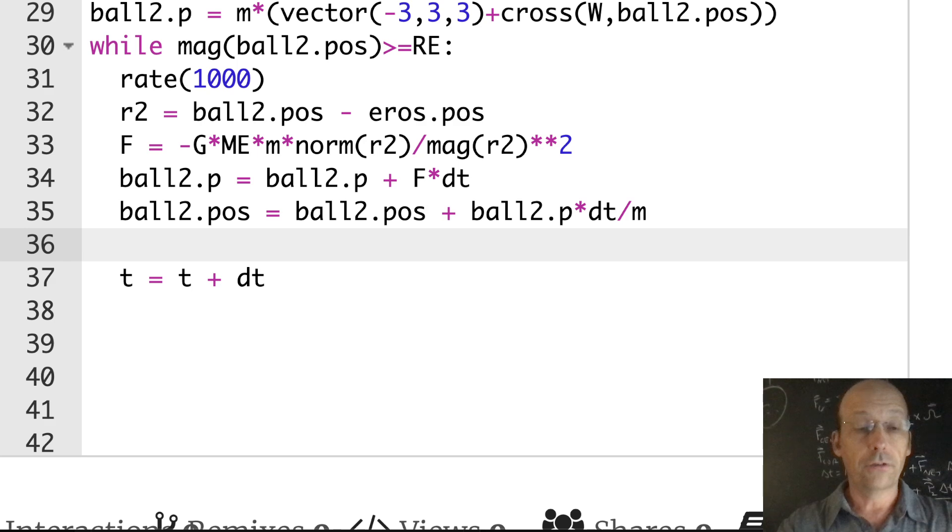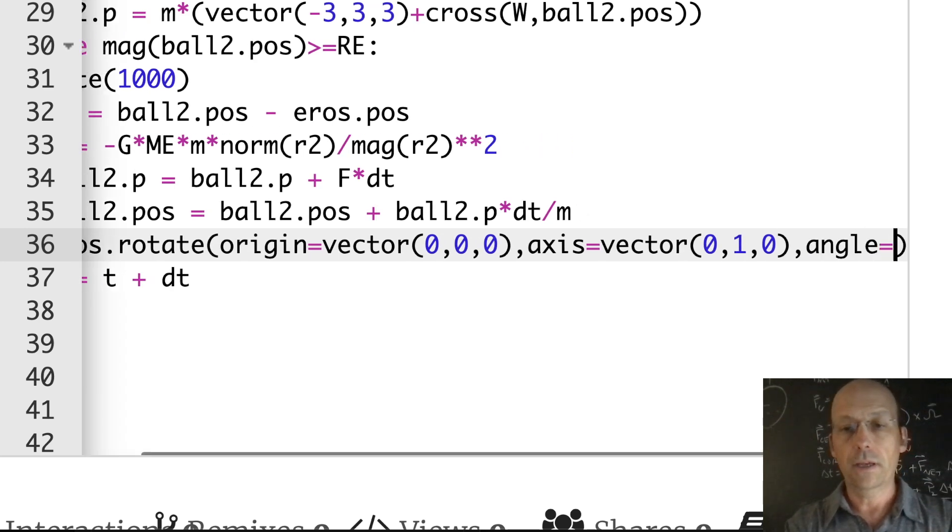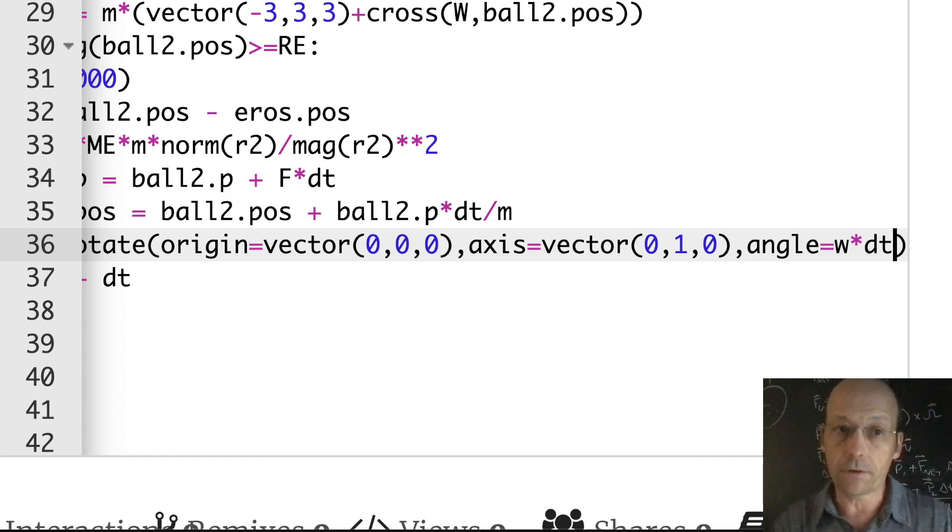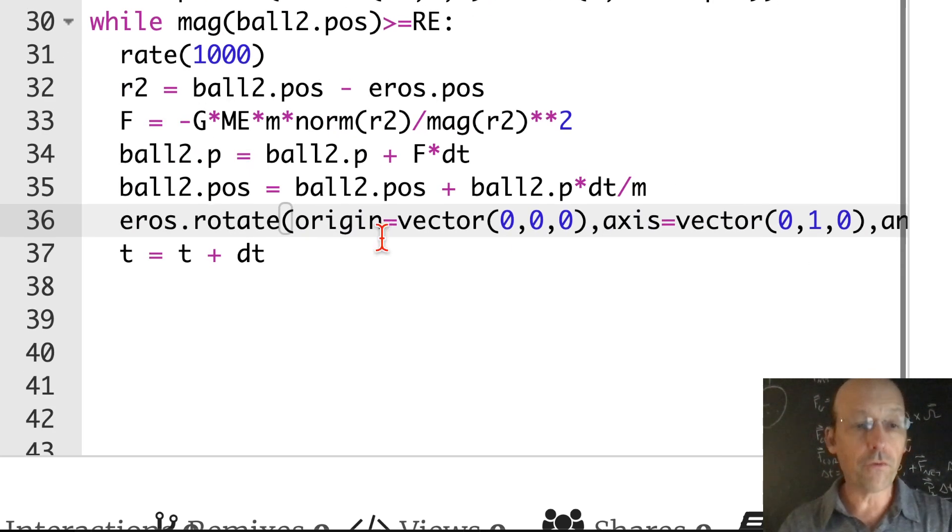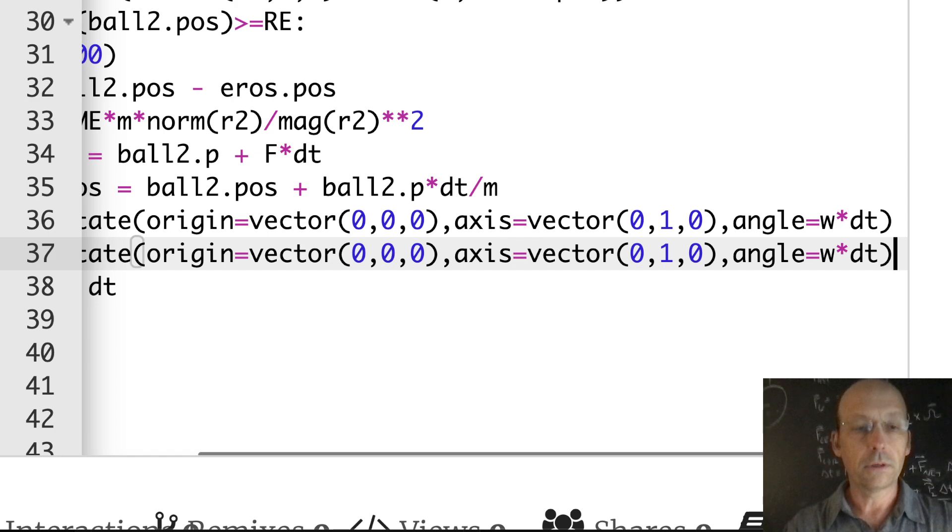All we need to do is rotate those things. I can do that. Down here in my second loop, I'm also going to rotate Eros. We can do that with the rotate function. Eros dot rotate, give it the origin. I'm going to rotate about its origin: origin equals vector zero, zero, zero. I need to give it an axis about what to rotate. I'm going to rotate about the Y axis: axis equals vector zero, one, zero. The magnitude doesn't matter, just the direction. Then I need to give it an angle. I'm going to rotate it omega dt each time interval. The angle is going to be omega times dt, the scalar, not the vector. Now I'm going to copy this because I want to rotate ball one too. I want to move it. Ball dot rotate, the same thing. I'm going to rotate the same way, about the same origin, about the same angle and everything.